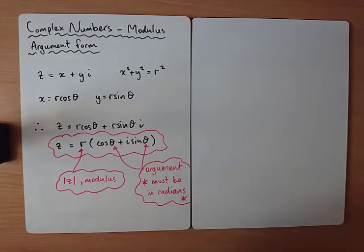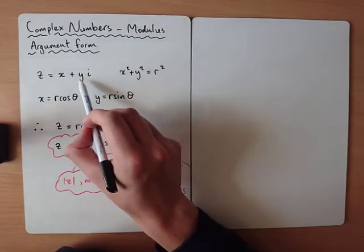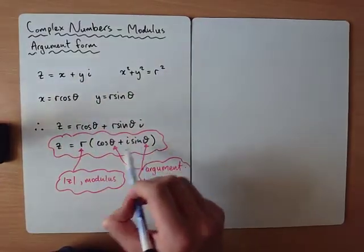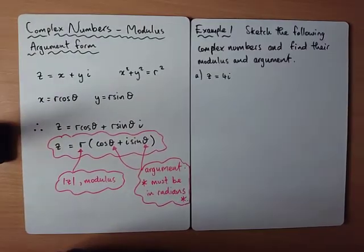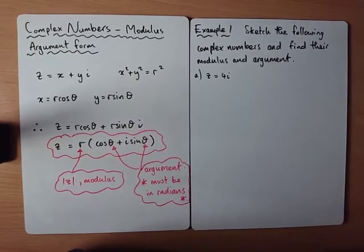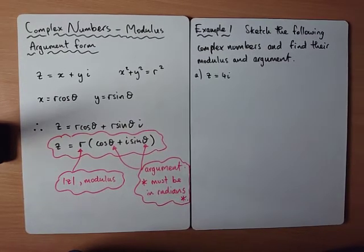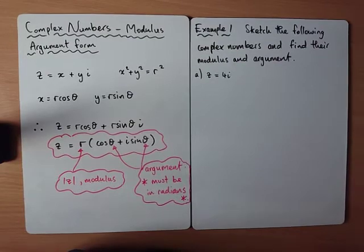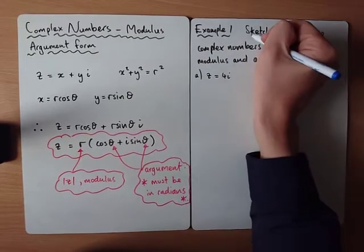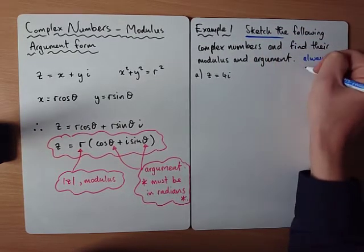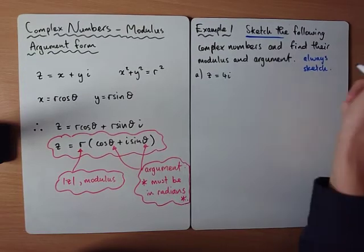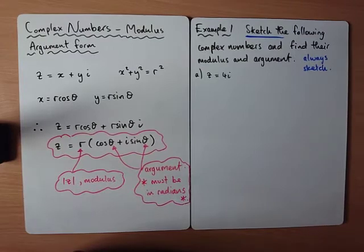We're going to swap some complex numbers from Cartesian form into modulus argument form — finding the distance and the angle. Even if a question doesn't say to sketch, always draw a sketch when finding the modulus and argument. It's really important.